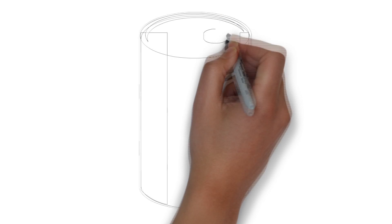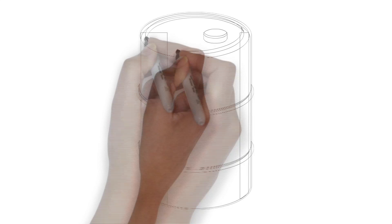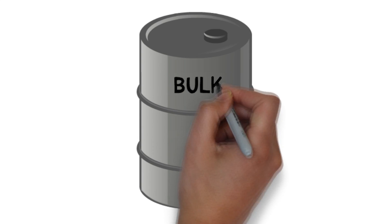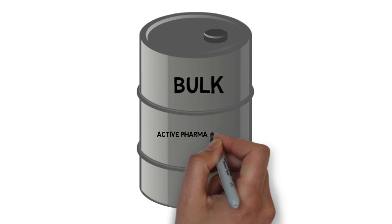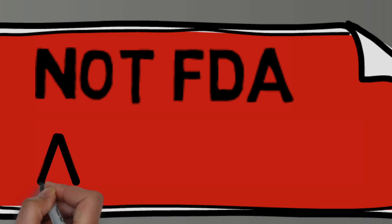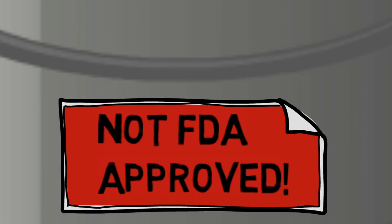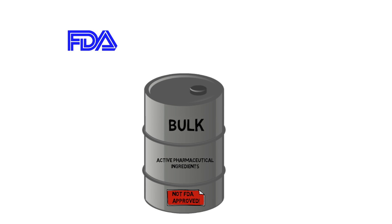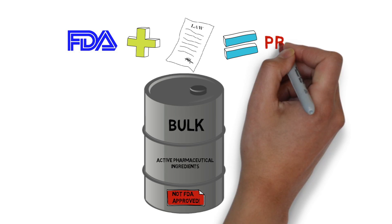There are also times when veterinarians might consider compounding from raw ingredients, which are also referred to as bulk or active pharmaceutical ingredients. These drugs are not FDA approved. And what you may not realize is that according to the FDA, federal law does not permit you to compound from raw ingredients.